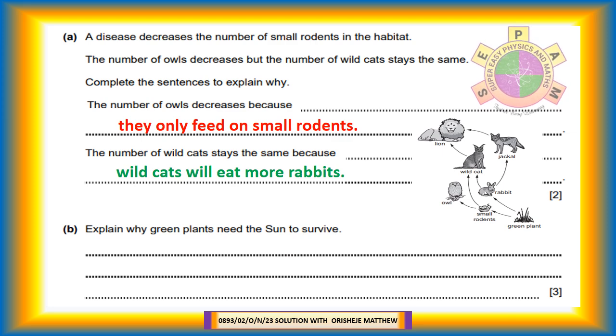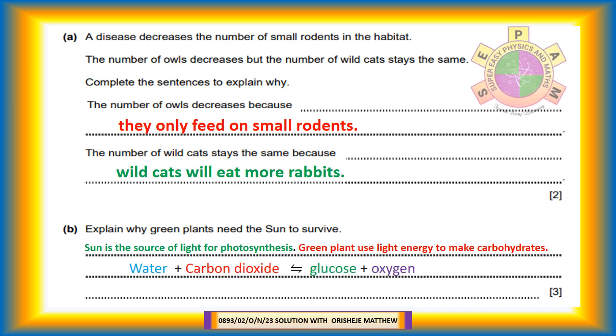Question 6b: Explain why green plants need the sun to survive. Sun is source of light for photosynthesis. Green plants use light energy to make carbohydrates. Carbon dioxide plus water to produce glucose and oxygen.